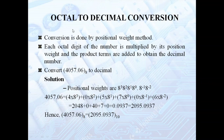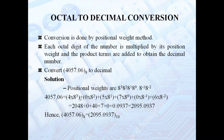Let us see how to convert octal to decimal. The conversion is done by the positional weight method: each octal digit is multiplied by its positional weight and the product terms are added to obtain the decimal number. Starting from the decimal point, the positional weights are 8 power 0, 8 power 1, 8 power 2, 8 power 3, and in the fractional part 8 power minus 1, 8 power minus 2. Multiply the positional weights by the position values, sum all values, and you get the decimal number.